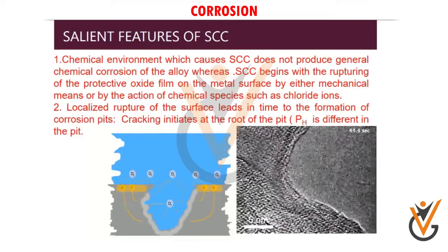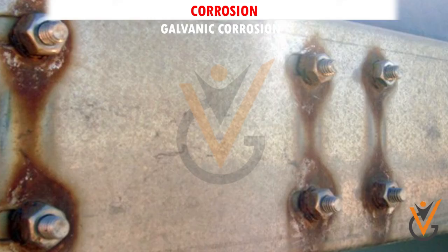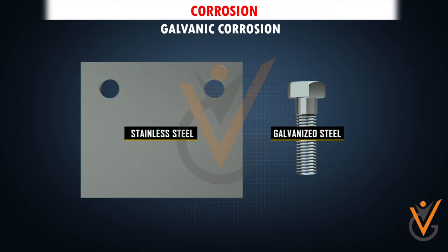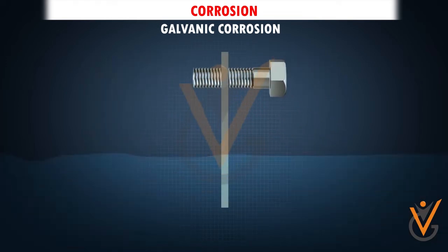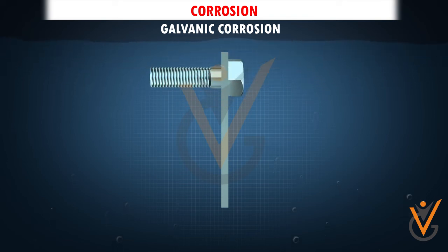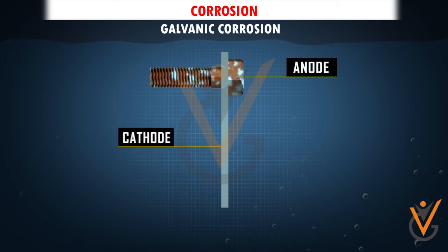Galvanic corrosion is the degradation of one metal near a joint or juncture that occurs when two electrochemically dissimilar metals are in electrical contact in an electrolytic environment. For example, when copper is in contact with steel in a saltwater environment.